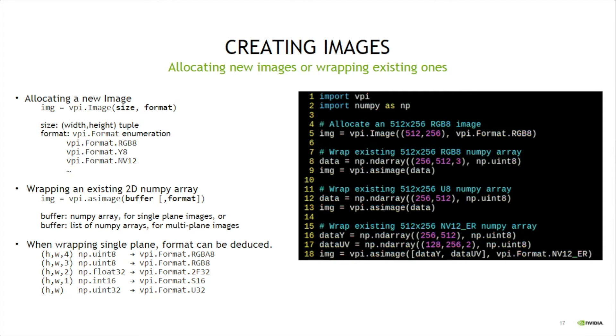Images with multiple planes can also be wrapped. Let's take, for instance, NV12 format with two planes, one with luma and another with subsampled chroma. The corresponding NumPy arrays are created on lines 16 and 17 and passed as a list to the asImage function on line 18, together with the format, NV12 extended range.